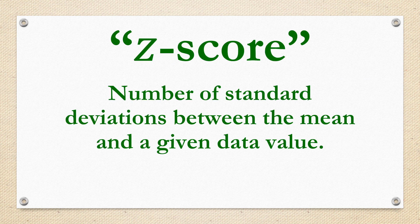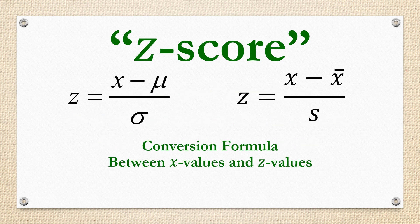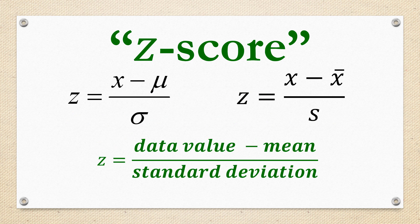A z-score is the number of standard deviations between the mean and a given data value. You can calculate a z-score using either of these formulas. Both formulas really mean the same thing: z equals the data value minus the mean divided by a standard deviation.